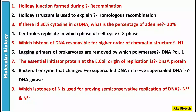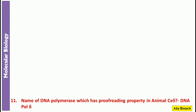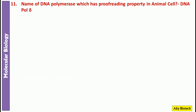Question 9: The isotopes used for proving semi-conservative replication of DNA are N14 and N15. Question 10: T4 DNA ligase requires ATP molecules. Question 11: Name of the DNA polymerase which has proofreading property in animal cells — it's DNA polymerase delta.